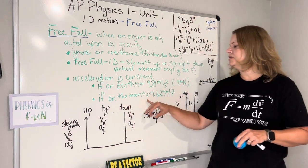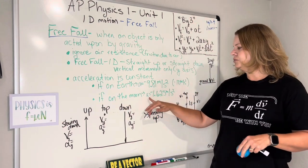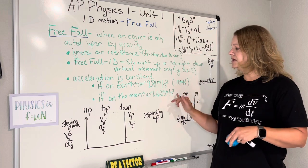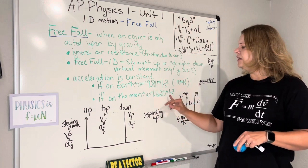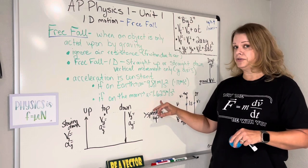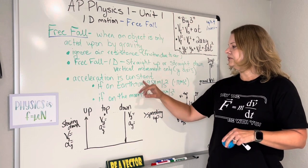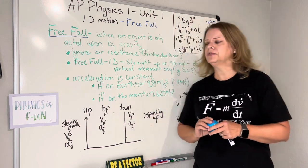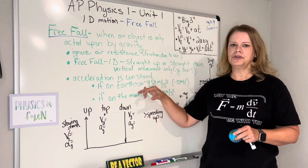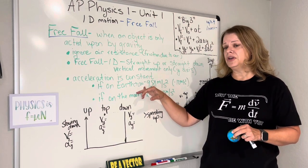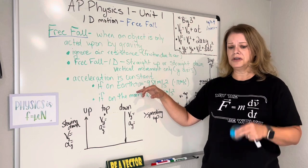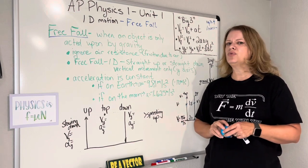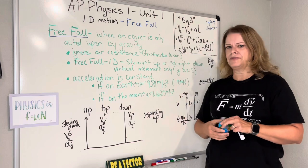It's also worth noting that on the moon and other planets, the acceleration is different. On our moon, the acceleration is negative 1.625 meters per second squared — just to give you some comparison. They'll either have you calculate that in problems or give it to you, so you don't have to memorize it. Also note that negative 9.81 is an average — at the top of Mount Everest, your acceleration is closer to negative 9.77, but we use 9.81 as the standard average.